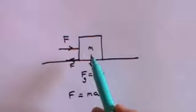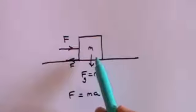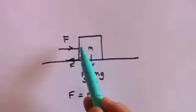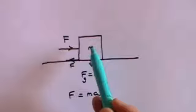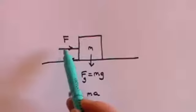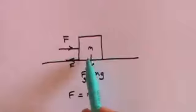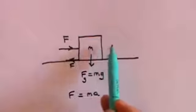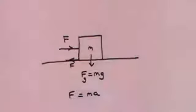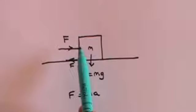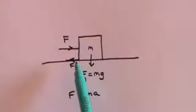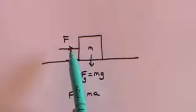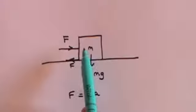Frictional forces are called non-conservative forces because they act in this peculiar way — they always grow to just enough to oppose the force trying to cause movement. But frictional forces can't last forever. Eventually, if I make that force large enough, I will overcome the frictional force and the bookcase will slide. The question is: what is the force required to overcome friction — in other words, what is the maximum frictional force?